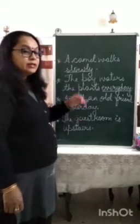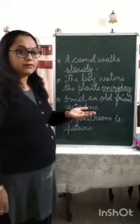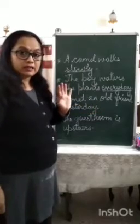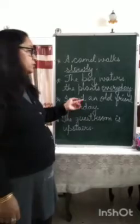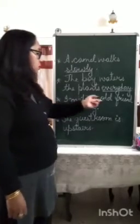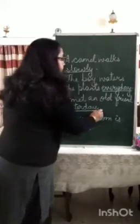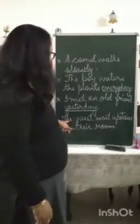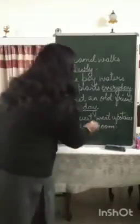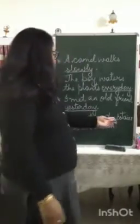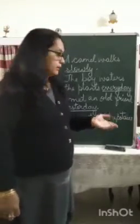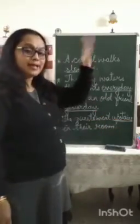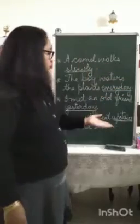Next: I met an old friend yesterday. When did I meet an old friend? Yesterday. So it is telling you the time — whether you met them yesterday, an hour ago, five hours ago, or last year. Yesterday is telling you when you met your old friend. The fourth sentence: the guests went upstairs to their room. Where did the guests go? Upstairs — they went to the next floor.